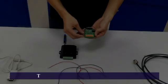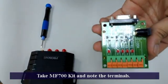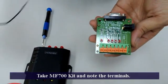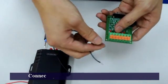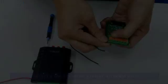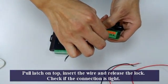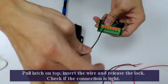Take MF700 Kit and note the terminals. Connect a black wire to ground terminal here. Pull latch on top, insert the wire and release the lock. Check if the connection is tight.